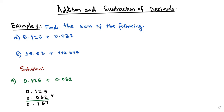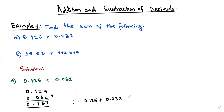So this means that 0.125 plus 0.032 is equal to 0.157.